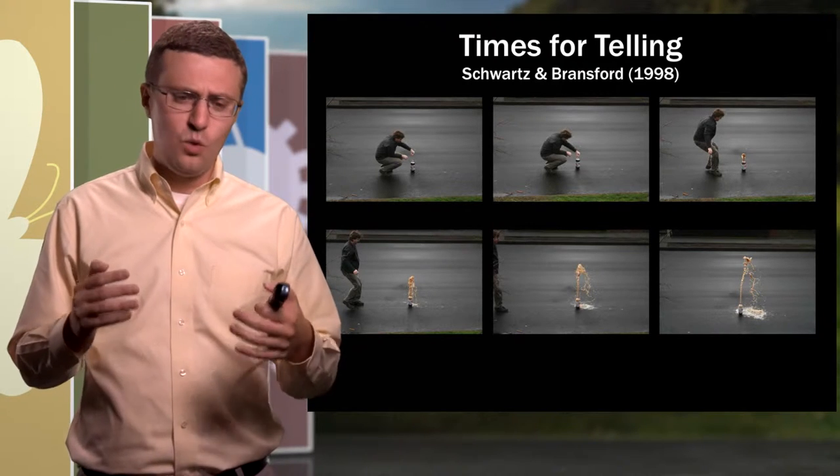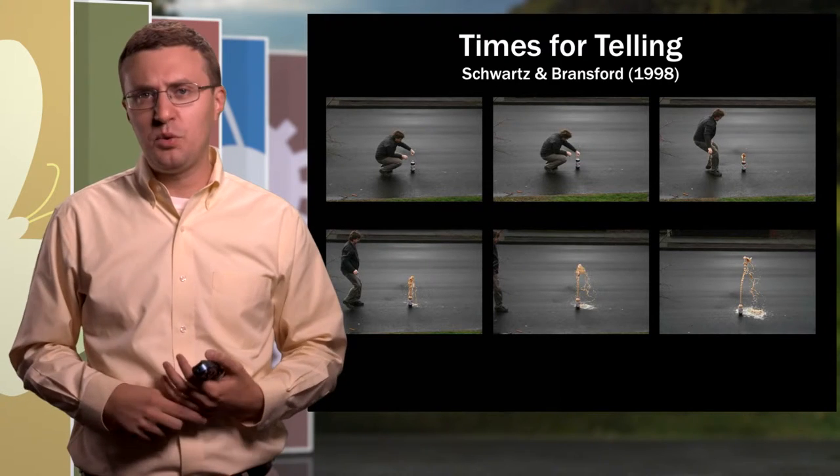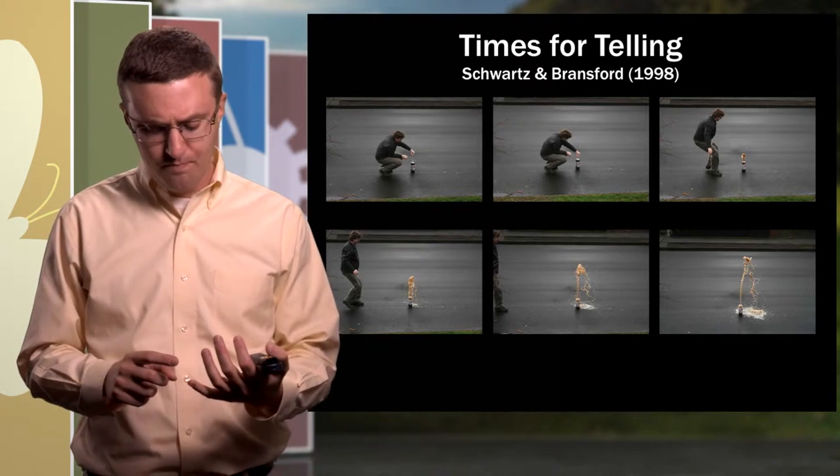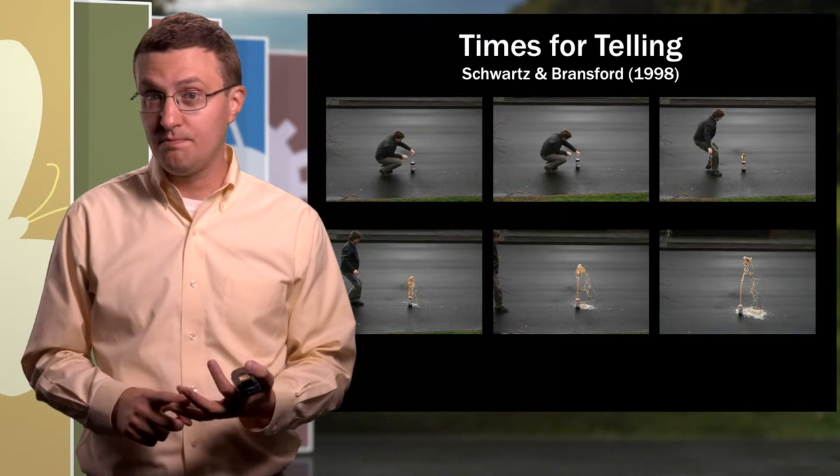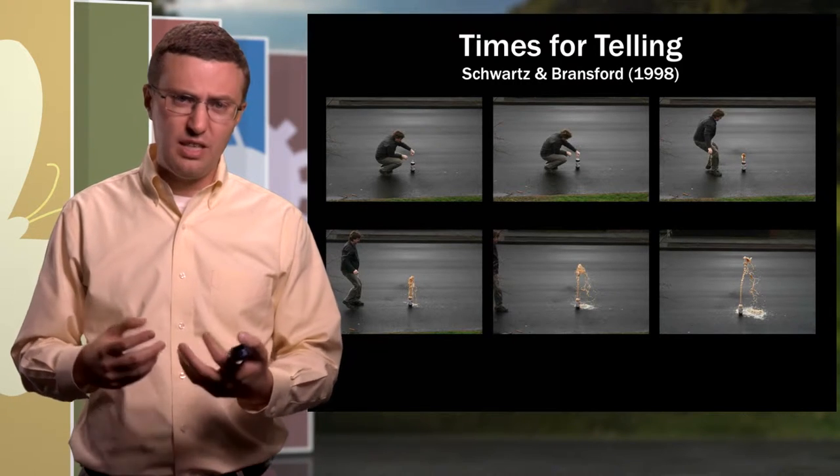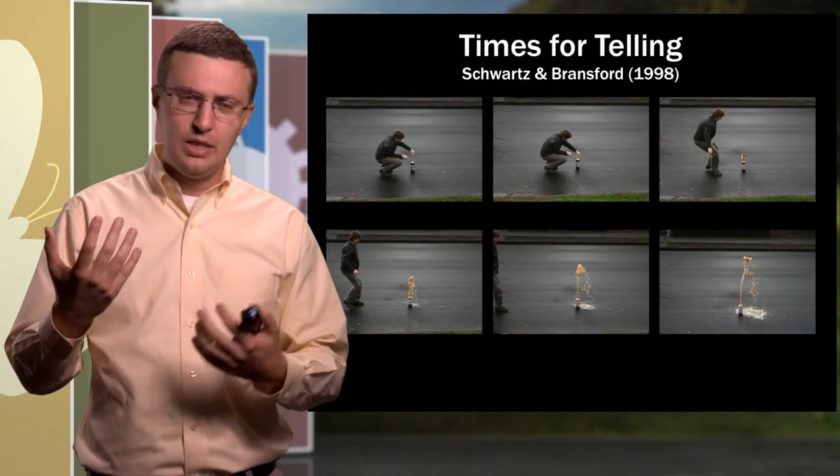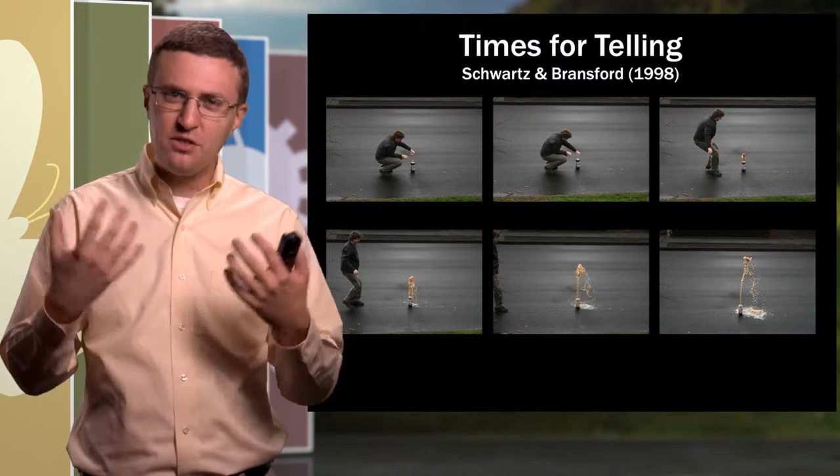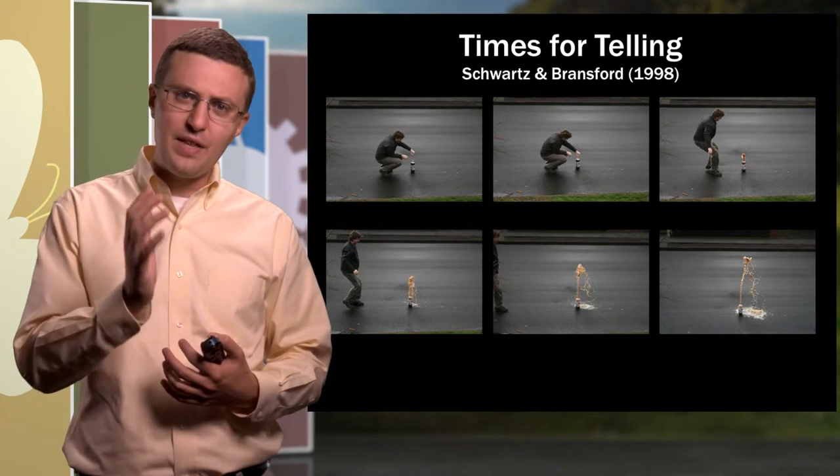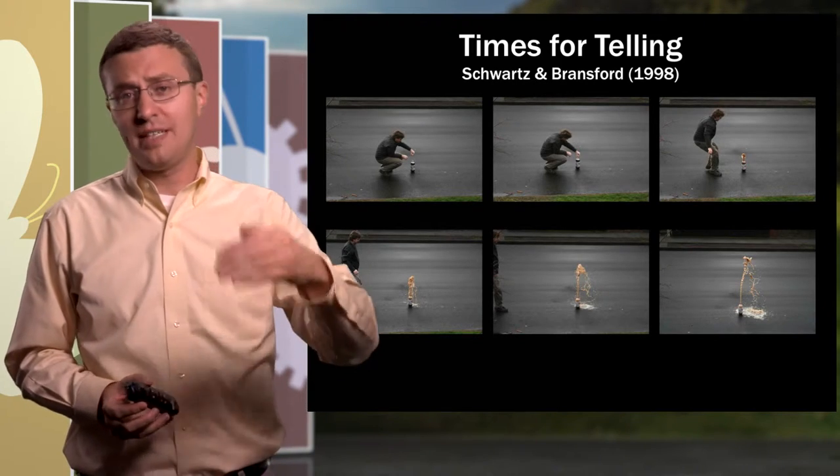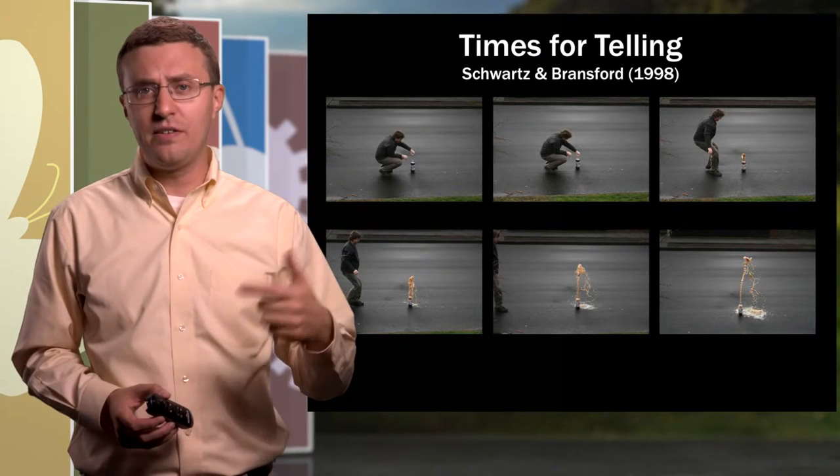So in this case, the lecture that comes at the end of that peer instruction sequence, I think, is an example of creating a time for telling in that the students are prepared to make some sense out of that lecture and they're motivated to want to know the answer. So having them engage with the clicker question and kind of make a prediction for this particular instance, that's one way to activate their prior knowledge. The fact that they're talking about it in pairs as well also brings to the surface what they know and what they don't know about this particular example. So we've kind of got that prior knowledge piece going on. And then when they're wrong or when they see a bunch of their classmates are wrong about the answer, that adds to the motivation level.